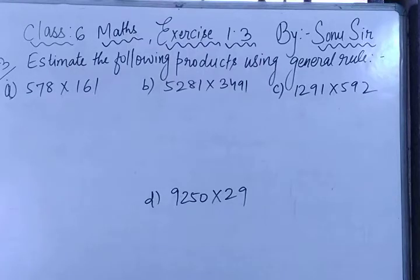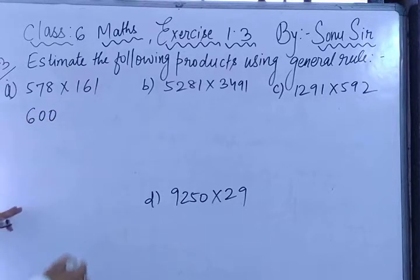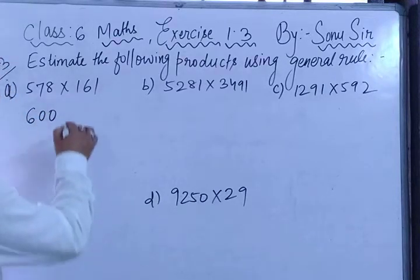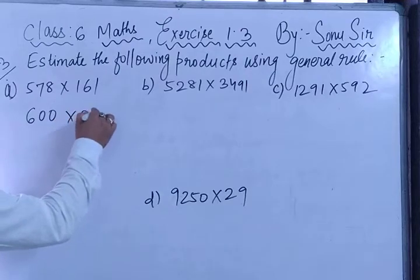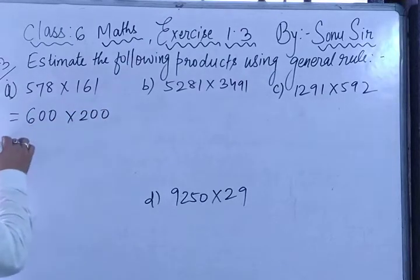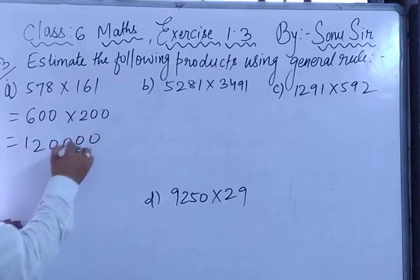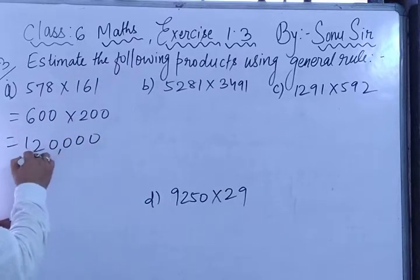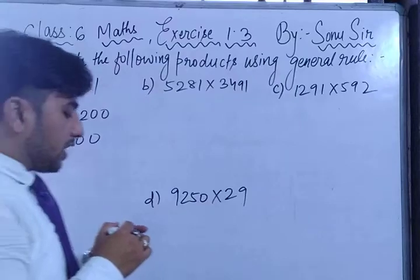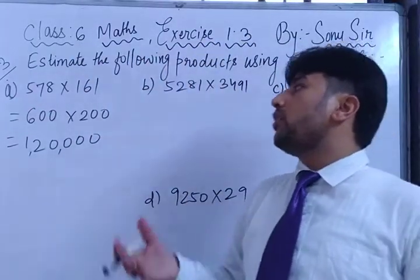As an example, in the first question: what will be the round figure value of 578? I hope all of you know — it will be 600. And what will be the round figure value of 161? It will be 200. So 6 × 2 = 12, with four zeros, giving 1 lakh 20,000. The first answer will be 1 lakh 20,000.